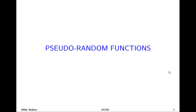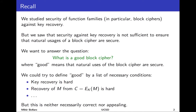Hello everyone. Today we're going to talk about pseudorandom functions. Remember where we left off last time: we studied a primitive called a block cipher. We understood that this is one of the main building blocks for cryptography. It's a low-level tool — not directly the way we'll eventually perform encryption, but a crucial component. We need block ciphers that are secure, reliable, and fast.